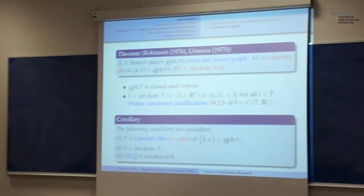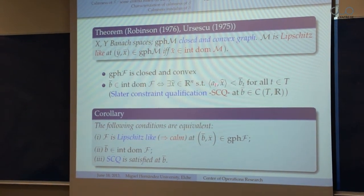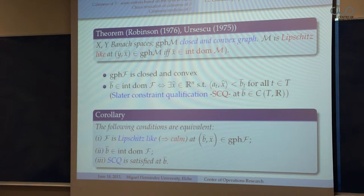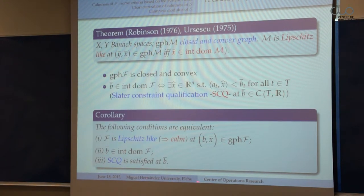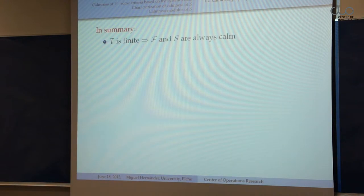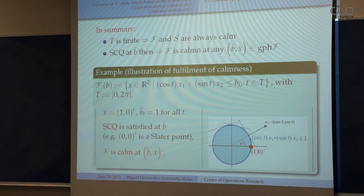Through the Aubin property we have a clear sufficient condition for calmness when confined to our semi-infinite framework for the feasible set mapping. This sufficient condition comes from the classical Robinson-Ursescu-Therence theorem, which characterizes the Aubin property for a multifunction with a closed and convex graph via an interiority condition. For our feasible set mapping, this interiority condition is characterized through the Slater constraint qualification — the existence of a strict solution of the system. In summary, the Slater constraint qualification constitutes a sufficient condition for calmness, and under it the feasible set mapping is calm.